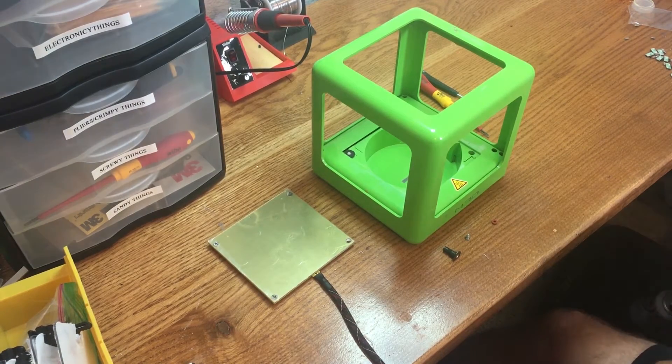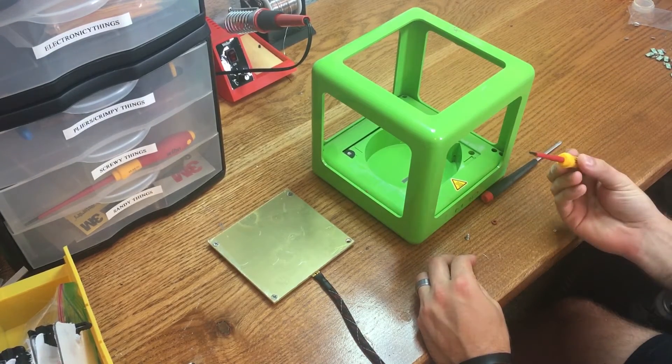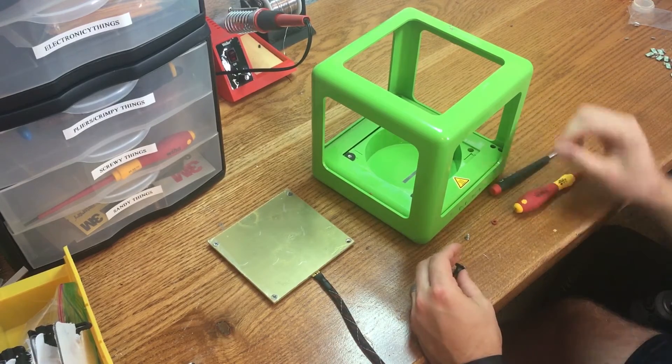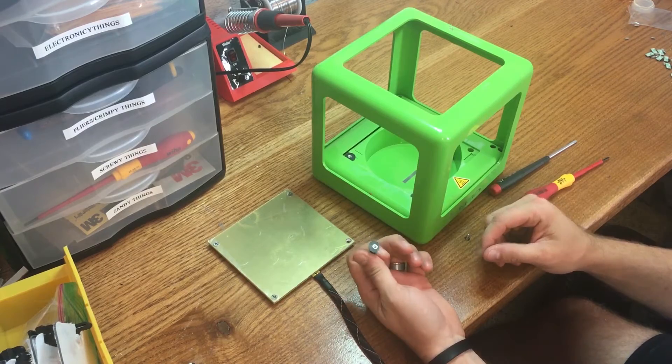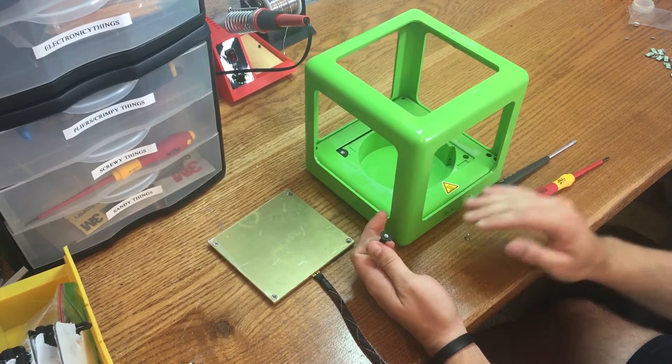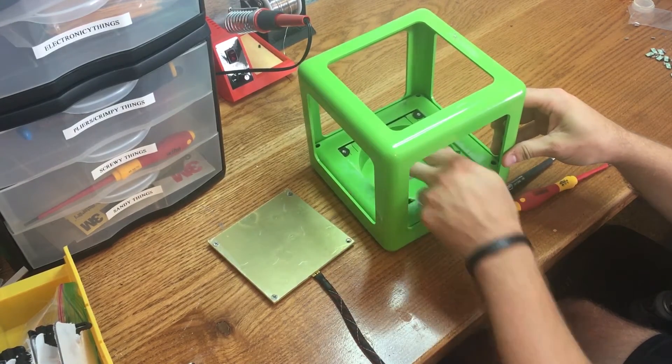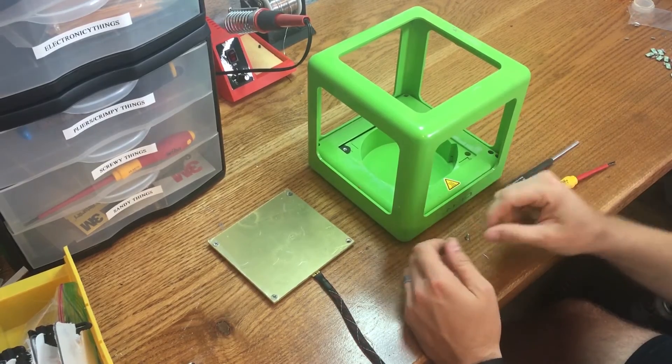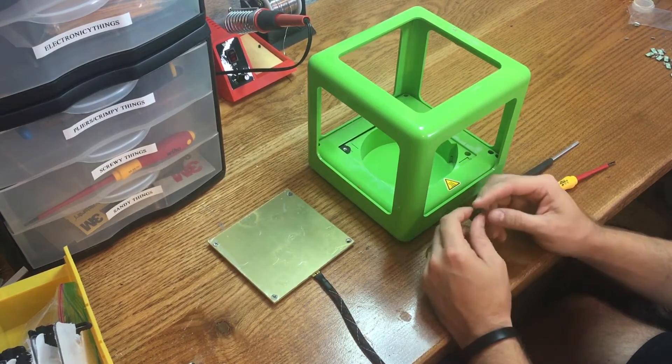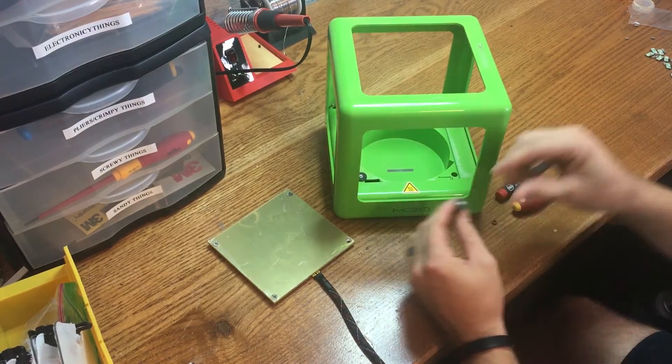You're going to need a flathead small screwdriver and a Phillips head screwdriver. These are the mounts and they go in first. If you remove your OEM build platform, there are four holes around the base, and these mounts are made to go inside those holes. I've already installed three of them and I'll show you how to install this last one.